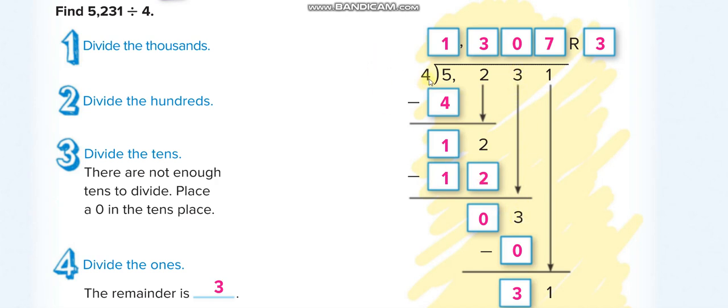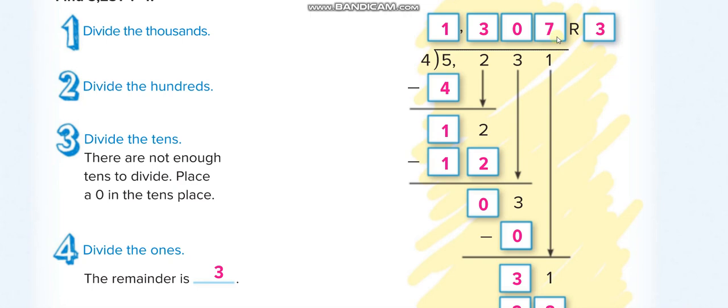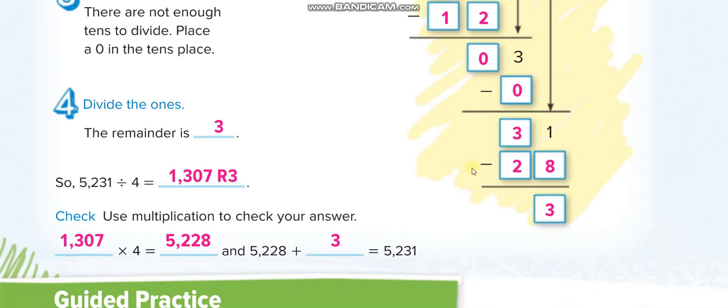Now 4 times 1 is 4, more than this. So 4 times 0 is 0, 3 minus 0 is 3, and you bring the 1 down, it becomes 31. And 4 times 7 is 28, 31 minus 28, remainder 3.